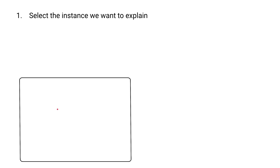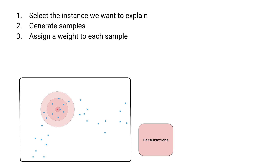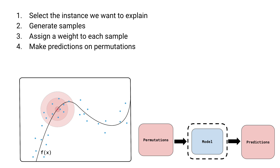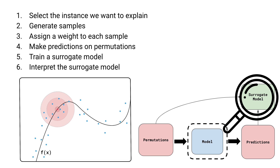Now, there's a lot of choice around how we build such a surrogate model. Let's summarize the steps taken by the LIME algorithm. Step one: we select the instance we want to explain. Step two: we generate samples by permuting feature values. Step three: we assign a weight to each of the samples based on how far they are from the instance. Step four: we make predictions on these permutations using the original black box model. Step five: we train a surrogate model using the weighted samples and predictions as the target variable. Finally, we interpret the surrogate model. The LIME weights in the output are actually the coefficients of a linear surrogate model — this is the interpretation of that model.